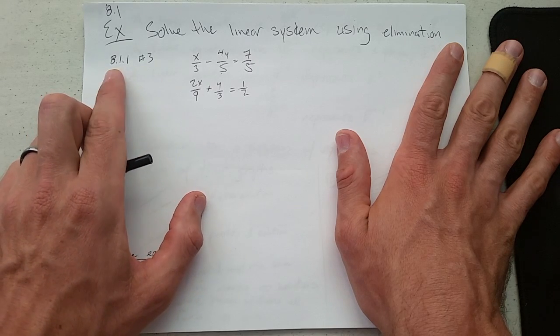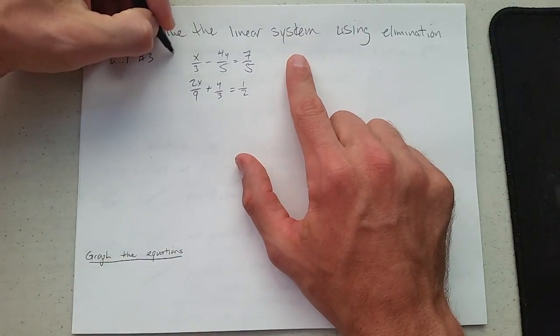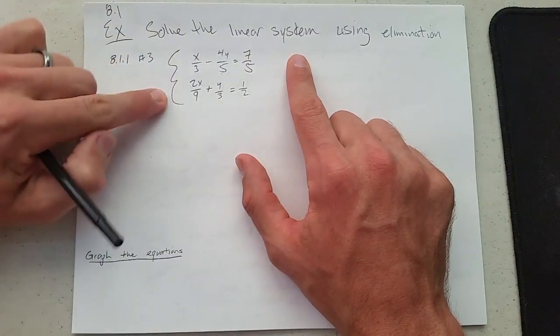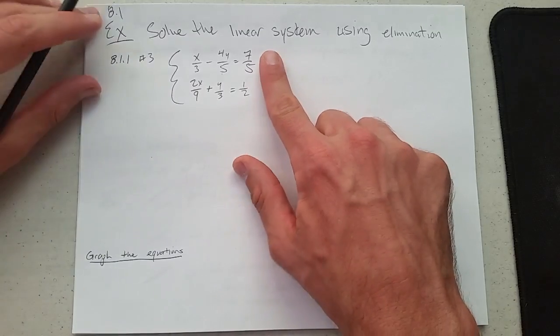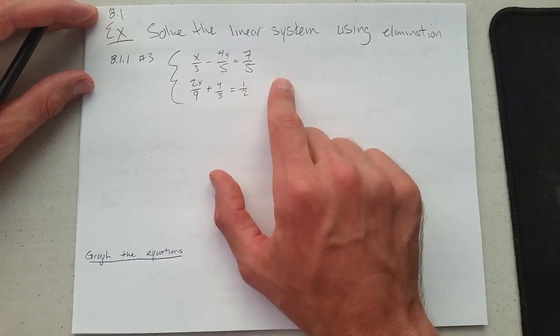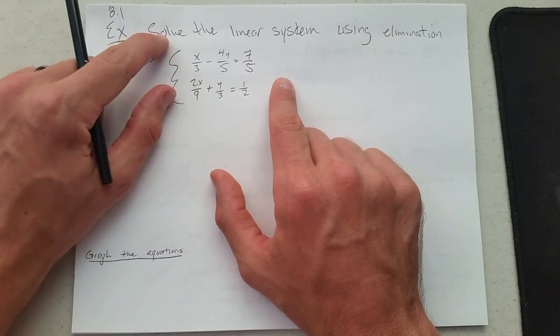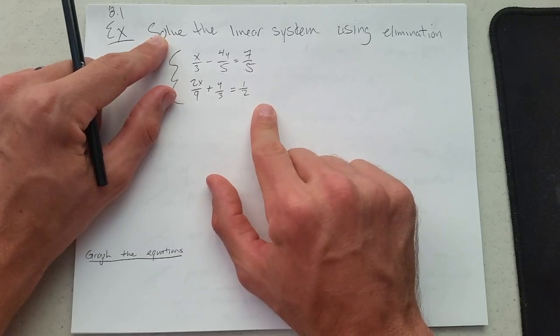This is problem number three in 8.1.1, and we have a system of two equations. We usually group it with this curly bracket here. You may be tempted to close it on the other side—you're welcome to—but we typically just group them on the left side without closing it with another curly bracket.